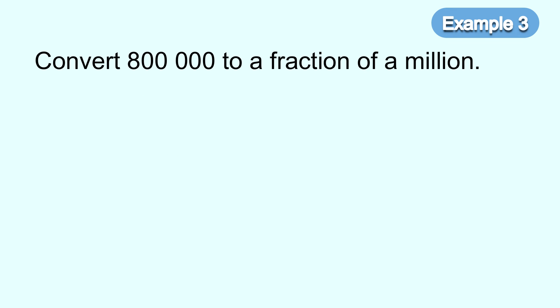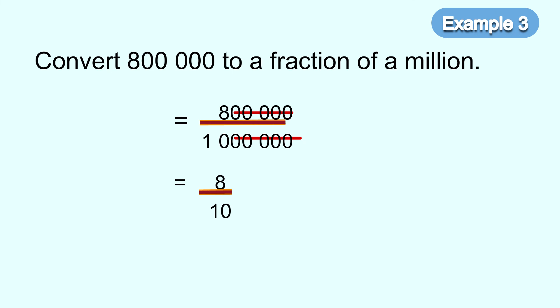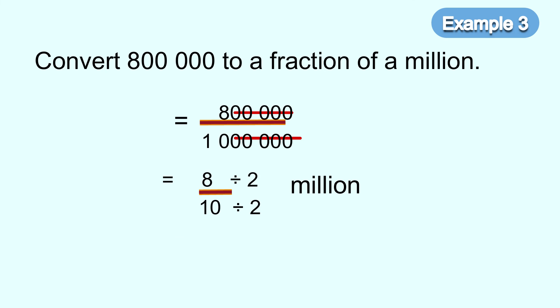Next example: state 800,000 as a fraction of a million. Divide by 1 million. Cancel the zeros — you will have 8 over 10 million. Then simplify 8 over 10. We get 4 over 5 million.